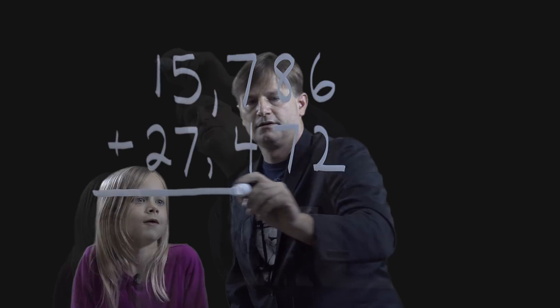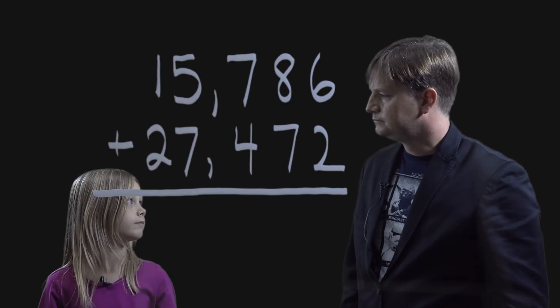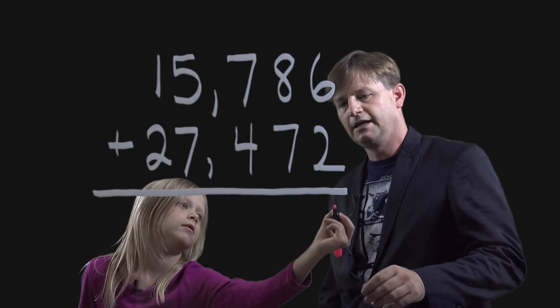Let's do one. Let's do a couple big numbers. Autumn, what's the first thing that we do? We add the ones. Yes. What do you get? Eight. So, put an eight right there.